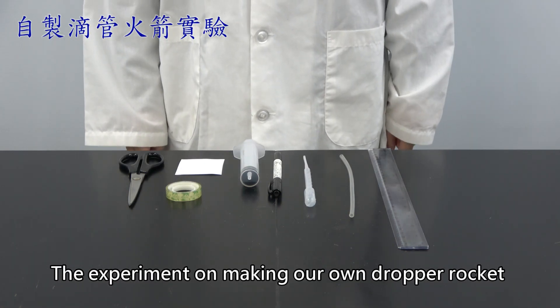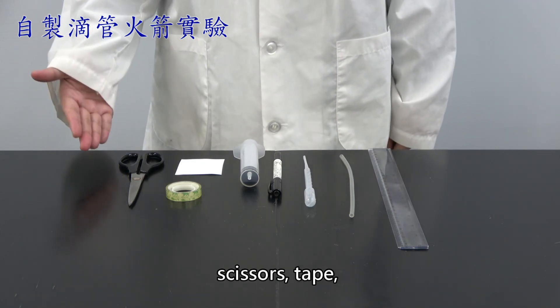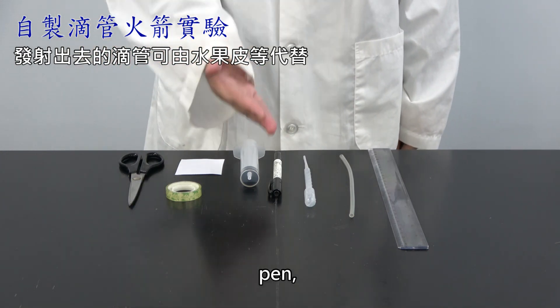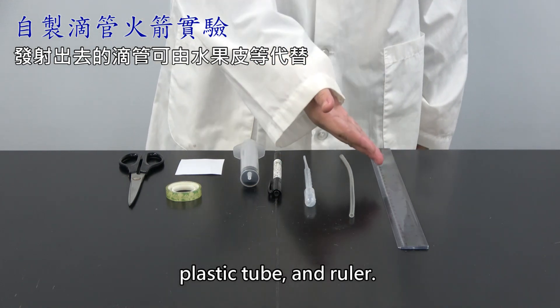The experiment on making our own dropper rocket. The material we prepared include scissors, tape, paper, syringe, pen, plastic dropper, plastic tube and ruler.